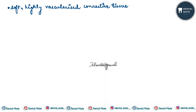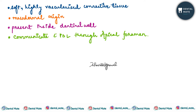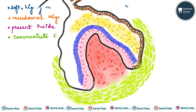Dental pulp is defined as a soft, highly vascularized connective tissue of mesodermal origin, present inside the dentinal wall, and communicates with the PDL through the apical foramen. It is also known as the heart of the tooth.